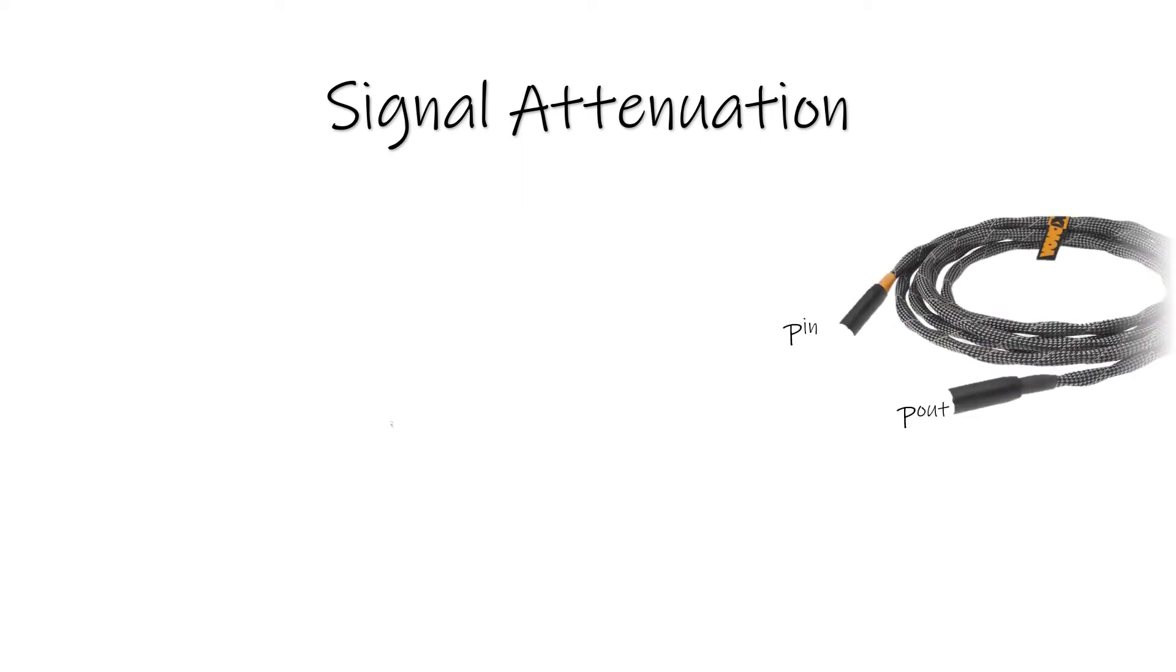This is one of the parts of communication: signal attenuation. Attenuation means loss of power. Let's see what actual attenuation means in a cable. Here is a cable having input and output terminals.